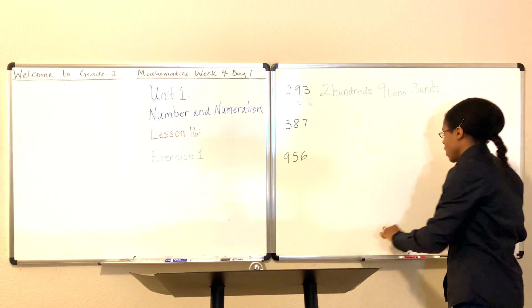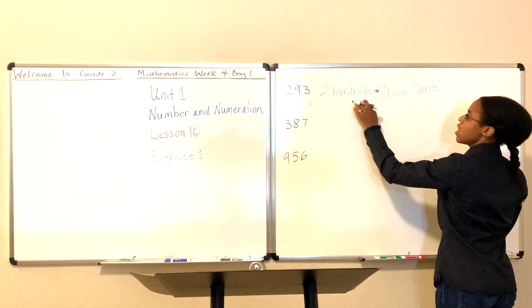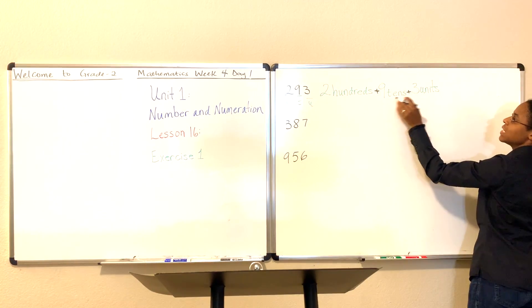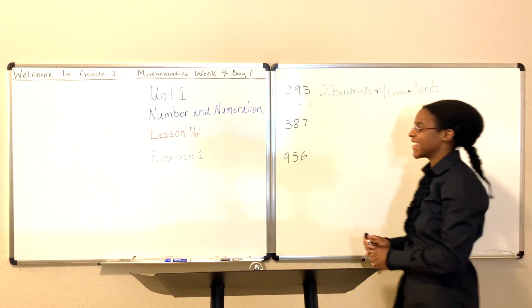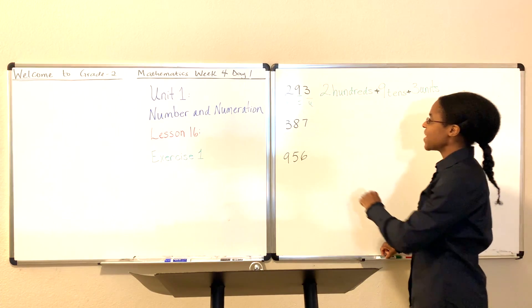Okay, perfect. So let's go ahead and add our plus sign in between these numbers. Two hundreds plus nine tens plus three units is 293. Good. Okay, so let's go ahead and move on to the next number.